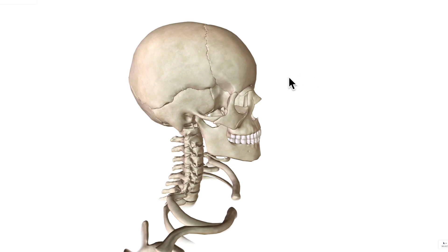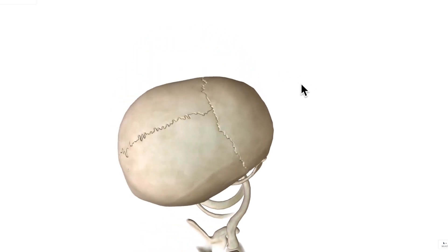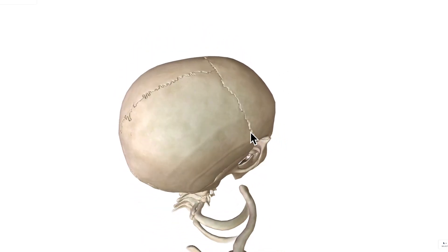If we move up to this region, we can see a feature coming along here. Do you know the name of that feature? Okay, so that is going to be called a suture, but it's called a coronal suture to be more precise.